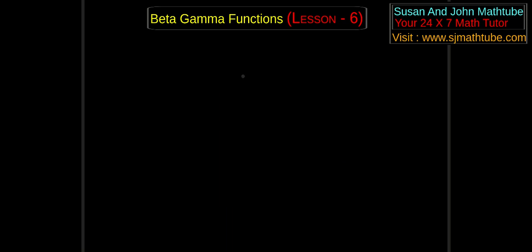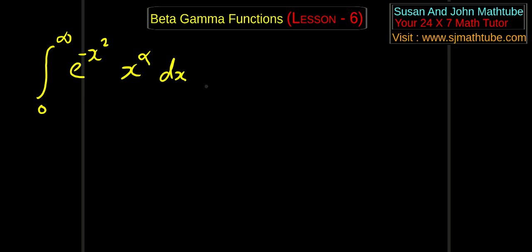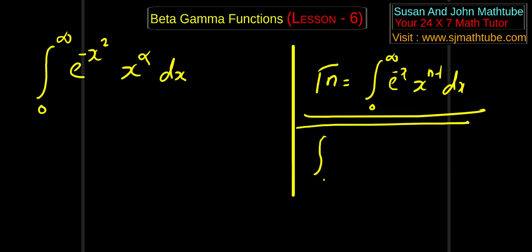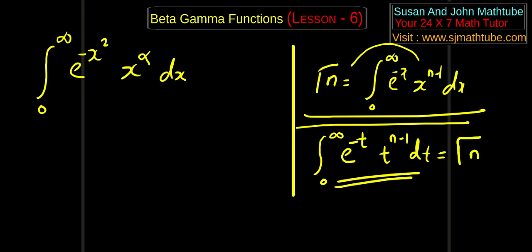Let us try one more question which looks similar. Please write: evaluate the integral from 0 to infinity of e to the power minus x square times x to the power alpha, dx. Once more, write the definition: Gamma(n) = integral from 0 to infinity of e to the power minus x, times x to the power n minus 1, dx. And I repeat — if you see integral from 0 to infinity of e to the power minus t, times t to the power n minus 1 dt, you must recognize this as Gamma(n). The day you understand this, you will find this problem really easy.